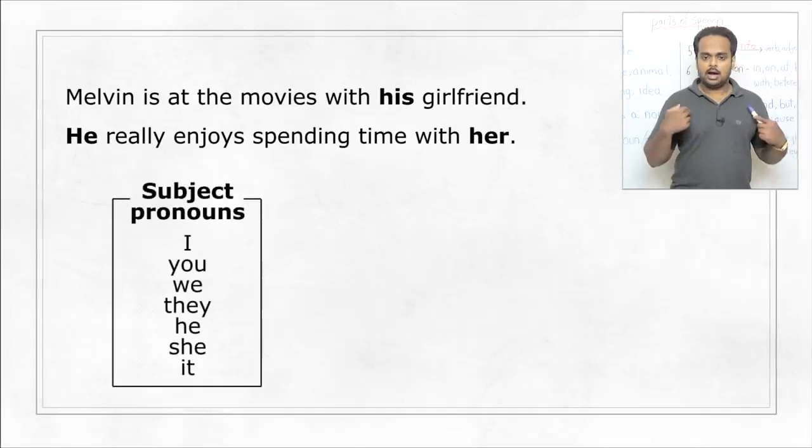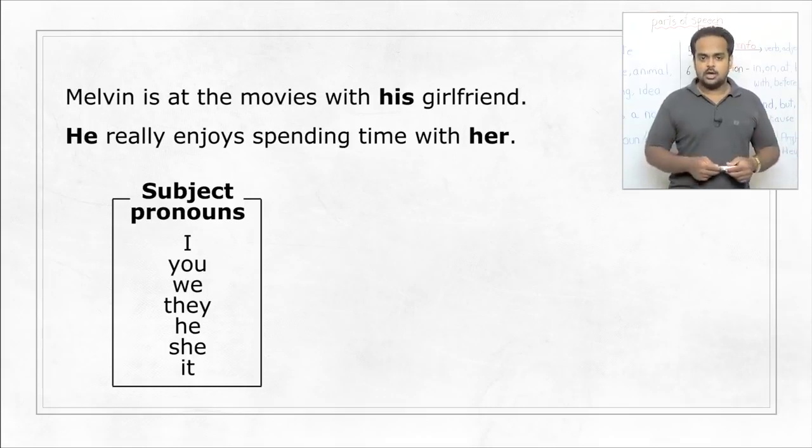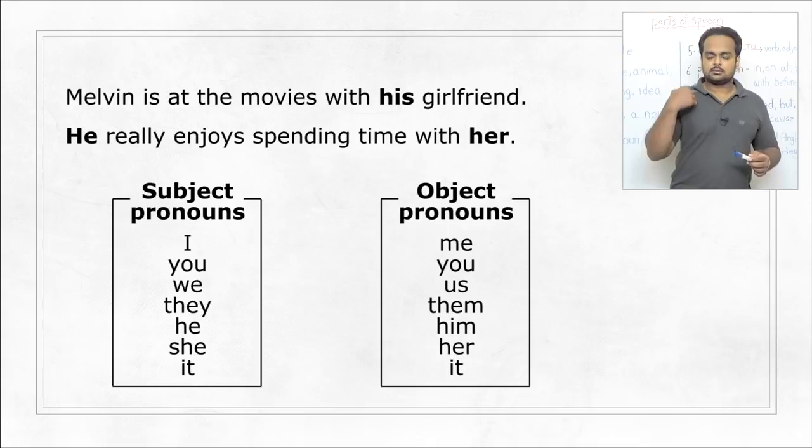These are I, you, we, they, he, she, and it. And to replace a noun in the object position, can you guess what we use? We use object pronouns. Those are me, you, us, them, him, her, and it.